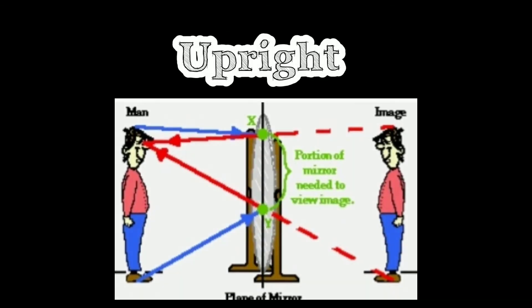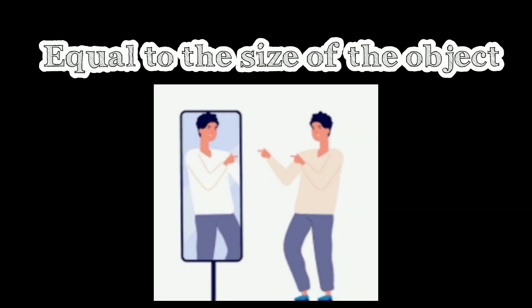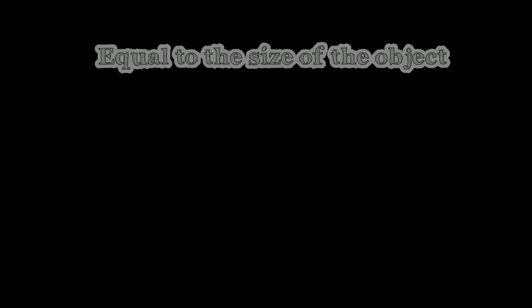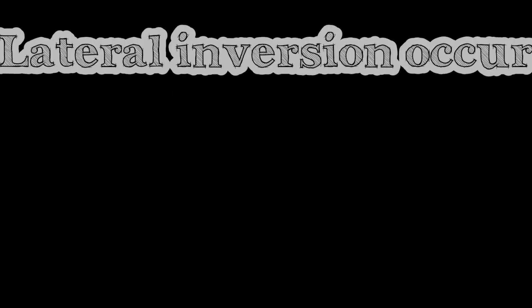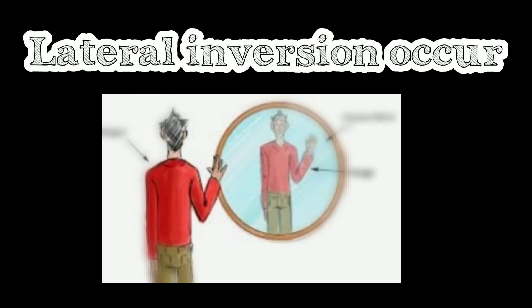Characteristics of images formed in a plane mirror: Virtual, Upright, Equal to the size of the object, Object distance and image distance are equal, Lateral inversion occurs.